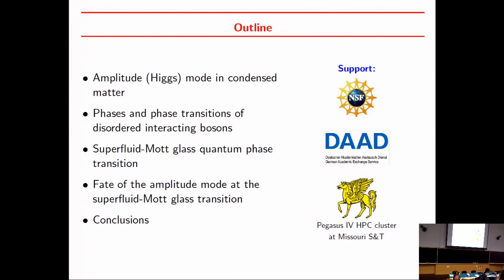There will be two short introductory sections: one reminding you about what the amplitude mode is, and the other reminding you about the basics of the physics of disordered bosons. Then there will be two main parts. In the first part, we will look at the quantum phase transition between a superfluid and an insulating state, analyzing critical behavior. In the second main part, we will go into the superfluid phase, look at the amplitude mode, and ask what it does as we approach the phase transition.